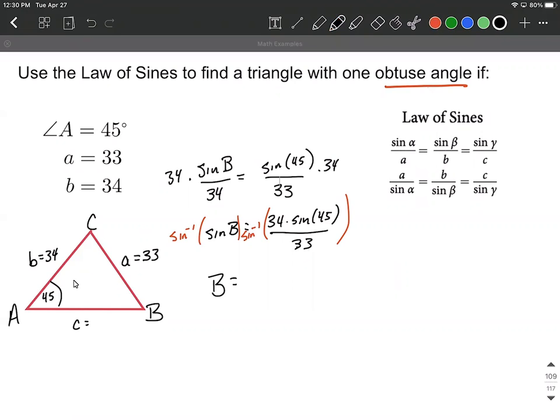That'll allow us to get B on one side by itself, and then putting this into my calculator, I end up getting 46.7637 degrees. And I was in degree mode, I didn't put my degree symbol, should be more careful about that, but that is in degrees.